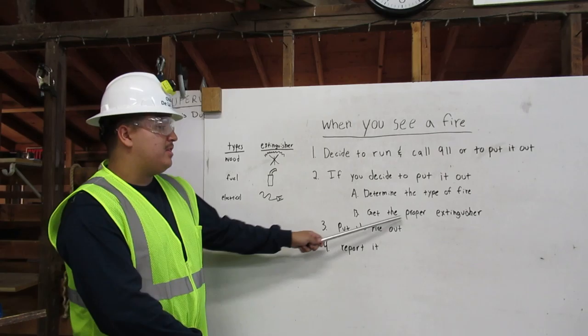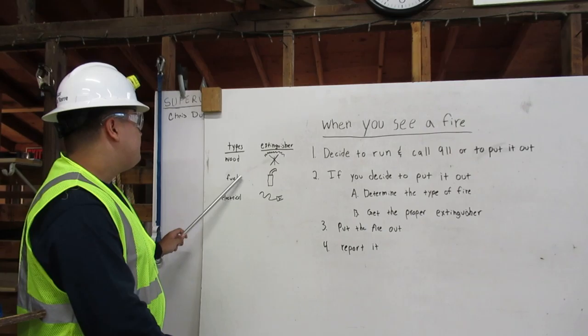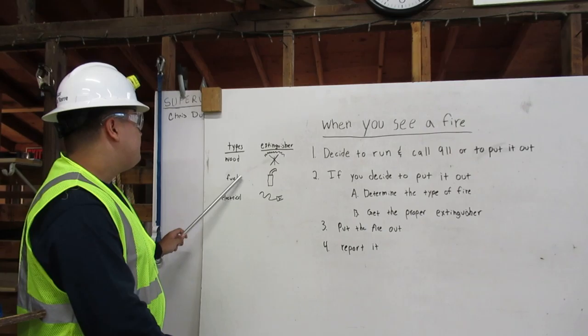Get the proper extinguisher. The wood fire extinguisher has the emblem of a campfire. The fuel fire extinguisher has the emblem of a gas can, and the electrical fire extinguisher has the emblem of an electrical cord.